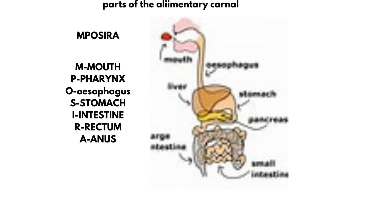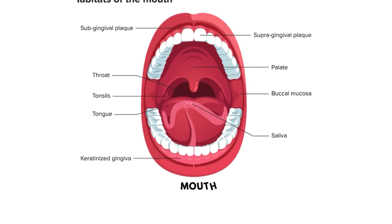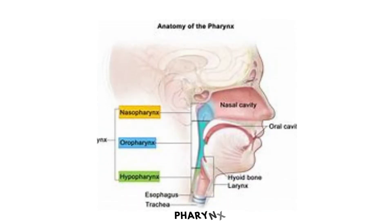The first part is the mouth. In the mouth, we have the teeth. We also have the palate — the upper part of the mouth is called the hard palate, and the roof of the mouth further back is called the soft palate.